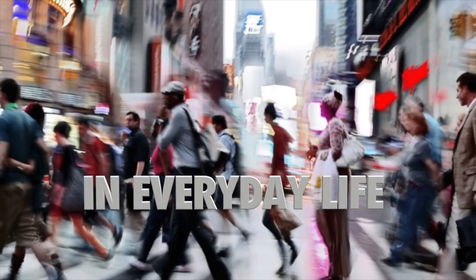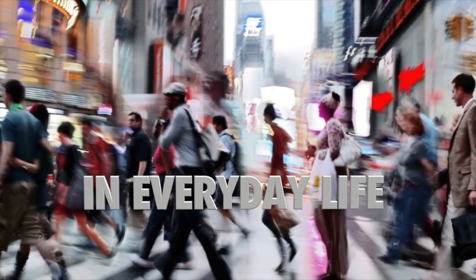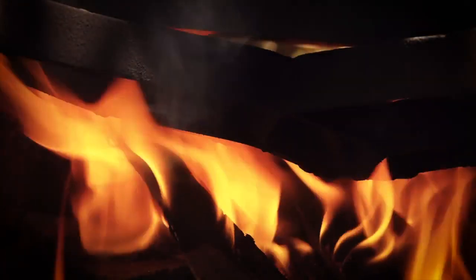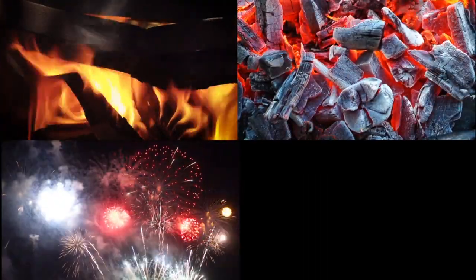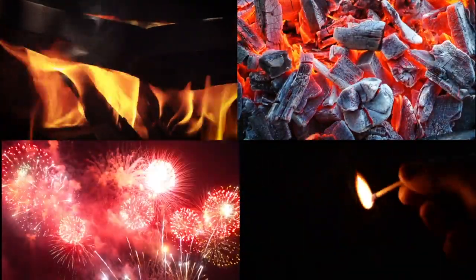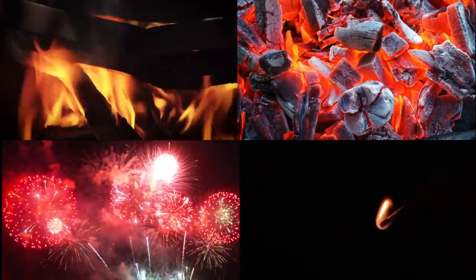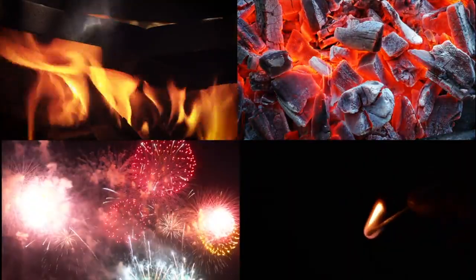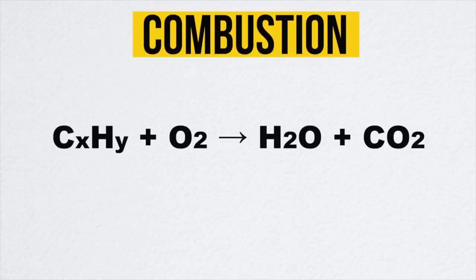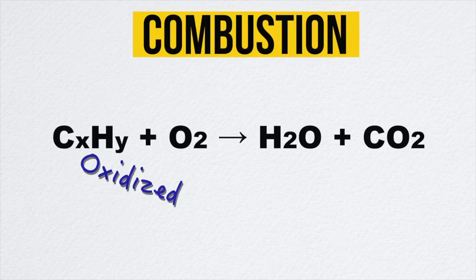Where do we find oxidation and reduction reactions in everyday life? Number five: combustion. Burning wood in the fireplace, burning coal, fireworks, lighting a matchstick — these are typical examples of combustion. Combustion is a redox reaction where the compound being burnt is oxidized and oxygen in the air is reduced.